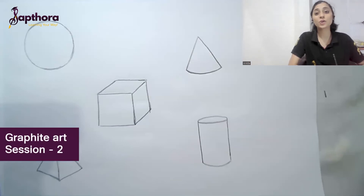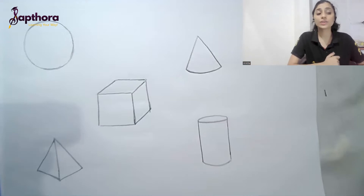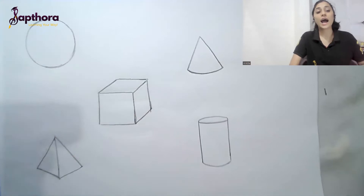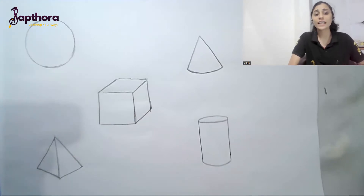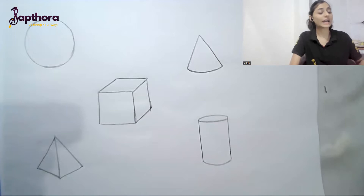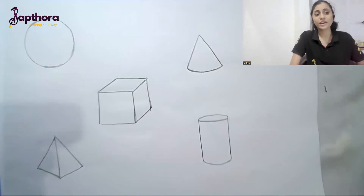Welcome to Day 2 of the graphite art session. Today we'll be learning how to shade 3D shapes and how light and shadow works. Before we start, let's first understand the use of learning how to shade these five 3D shapes and how this can help you.